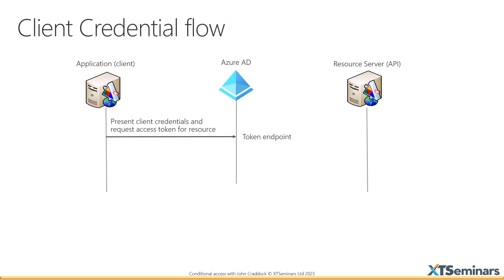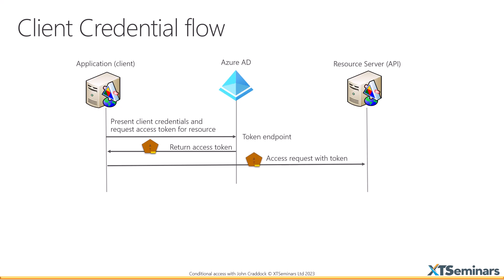Azure AD checks the application or client's credentials, and if those are okay, the next thing it does is run conditional access — if we're using conditional access for workload identity. If everything is okay and access is granted, Azure AD issues an access token. This access token is then used to present authorization to the back-end API. The back-end API validates the token and returns whatever data is necessary. It's a very simple model — we don't need refresh tokens because we've always got the credentials and can present them again.